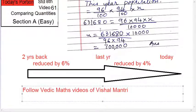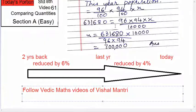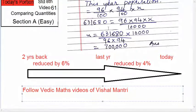Now you might say the division is difficult, but follow the Vedic Maths videos. The division is not difficult at all. Even using simple maths — divide 96 by 12, then go for 2 or 4, and within 2 or 3 steps you will get the answer. If you follow Vedic Maths, you will likely get the answer in the next step. So Vedic Maths — there's no option but to use it. The population 2 years back was 7,000,000. That is the answer.